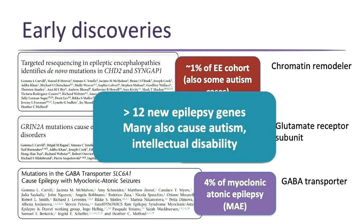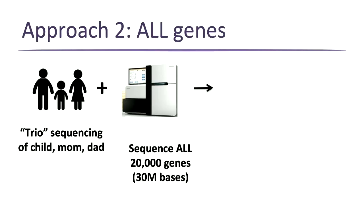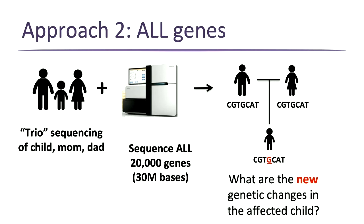The second approach is to sequence all 20,000 genes at once. When we do this — sequencing about 30 million letters of DNA — we sequence mom, dad, and the affected child at the same time. This very efficiently lets us identify new changes in the child that aren't present in either parent — we do a direct comparison of mom's, dad's, and the child's DNA.